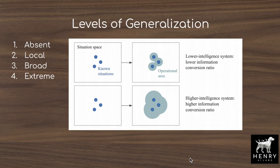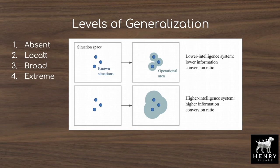A tic-tac-toe player has no generalization — it just enumerates the entire board space. The lines blur between local and broad generalization. An example of failed local generalization could be adding a noise map to a cat image and having it classified as a dog — an adversarial perturbation. It could extend to rotating the image causing misclassification, or introducing a new cat breed. It's tough to define the boundary between local and broad — like when you solve chess, it stops being considered intelligent.